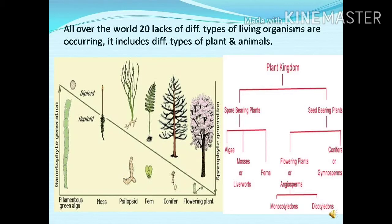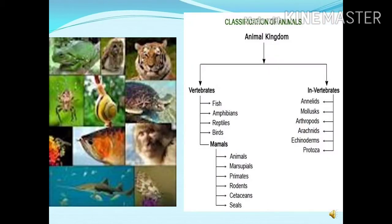When we consider the biodiversity of plants, there are spore-bearing plants and seed-bearing plants. The spore-bearing plants may also be called thallophytes, which includes algae, mosses, and ferns. Whereas the seed-bearing plants are the flowering plants and may be called angiosperms or gymnosperms. Angiosperms, further on the basis of number of cotyledons in their seeds, can be categorized as monocot or dicot. This is the basic classification of plant biodiversity.